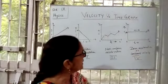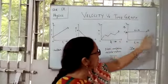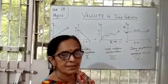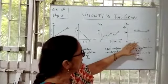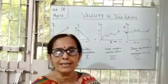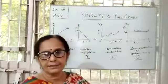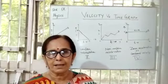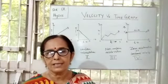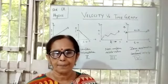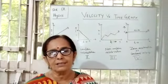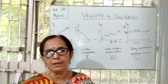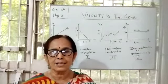In the fourth case, the graph line AB is parallel to the x-axis. If it is parallel to the x-axis, it indicates that the velocity of the moving object is not changing with time. When velocity does not change with time, the object is moving with uniform velocity, and if there is no change in velocity, the object has zero acceleration.